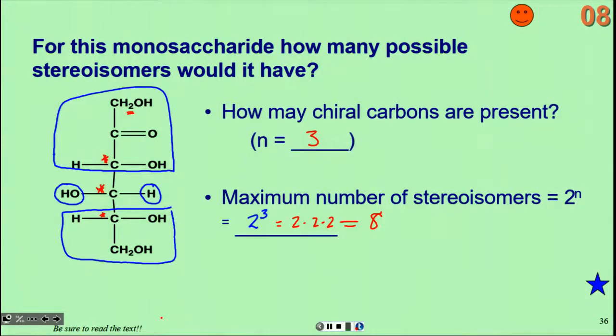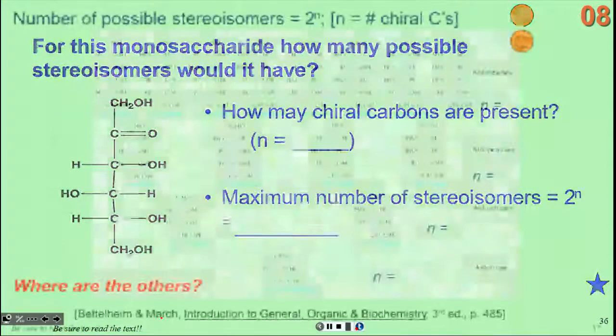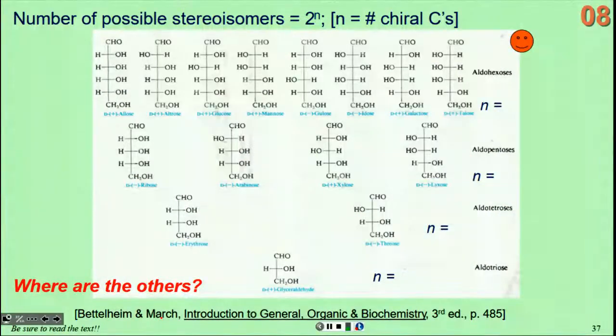This is a ketohexose. Any ketohexose is going to have eight stereoisomers. Some of them are D and some of them are L. I showed you this diagram with all these carbohydrates, including glucose. Glucose is up here in the top row. It's an aldohexose. We'll think about the number of possible stereoisomers for each of these structures. In order to do so, it's two to the N, you have to figure out the number of chiral carbons for each of them.